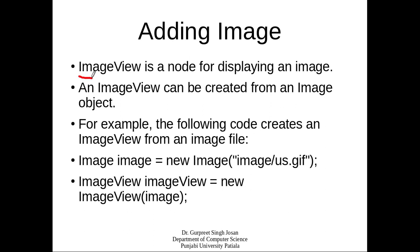ImageView is the class used for displaying the image on the application. ImageView is the node for displaying an image and can be created from an Image object. Once you have created an Image object, you use the ImageView class to display it. For example, the following code creates an ImageView from an image file — first we create an Image object from the Image class.